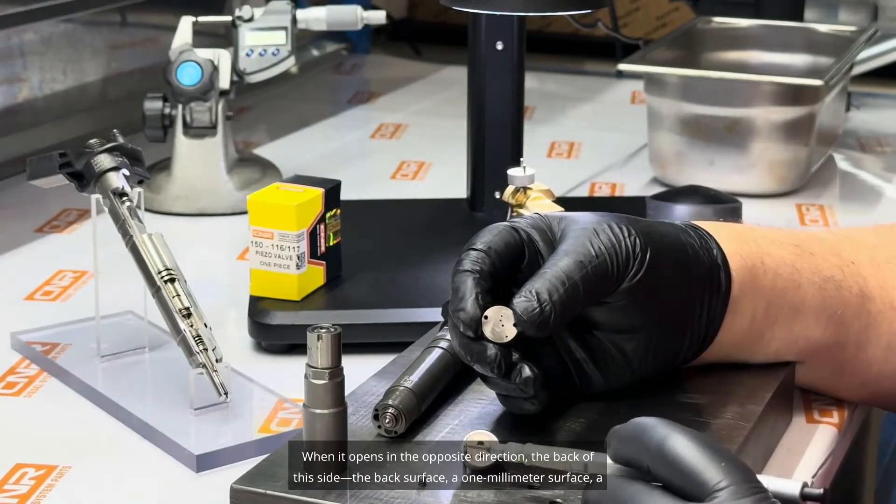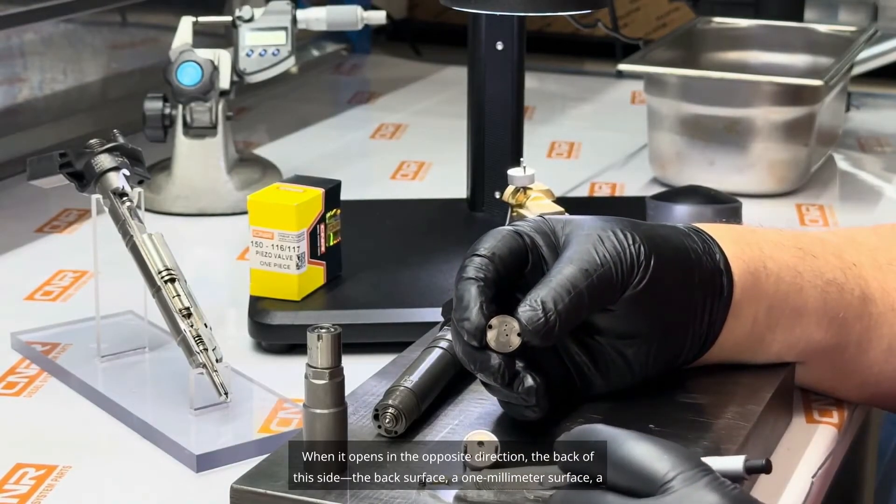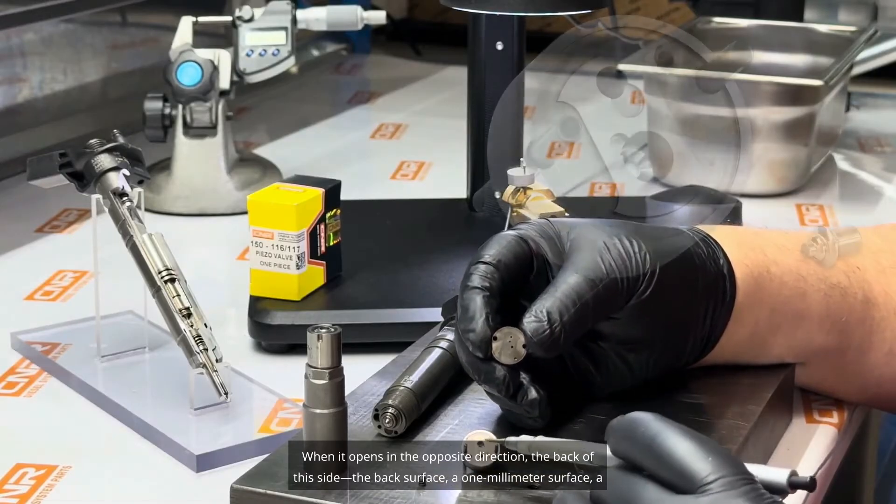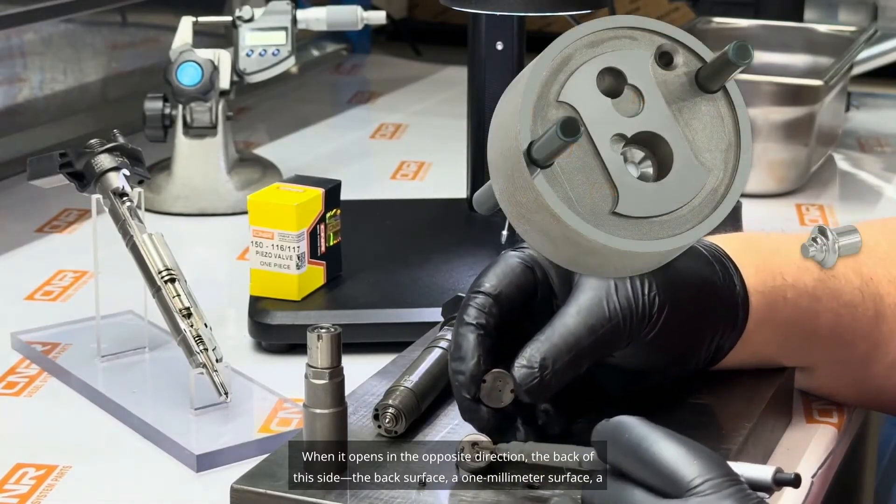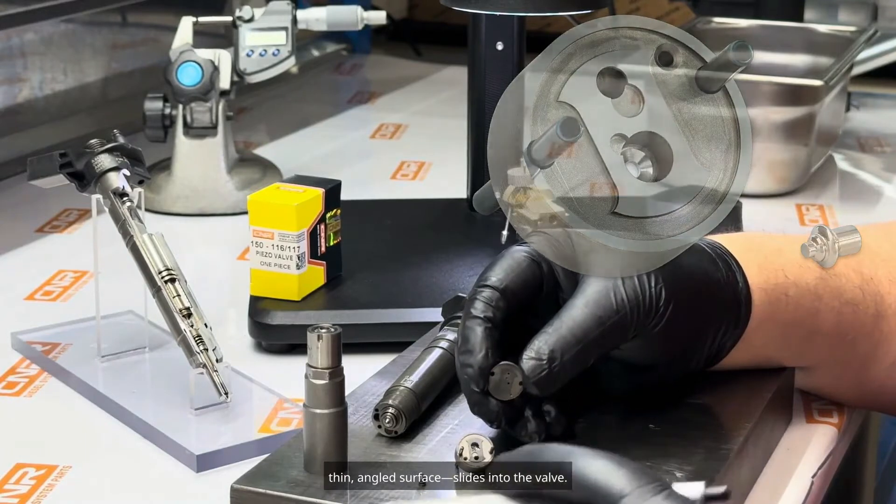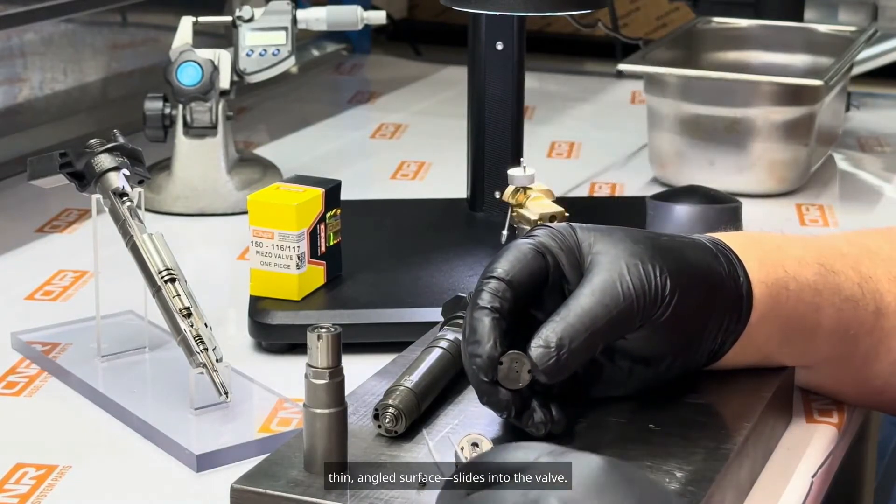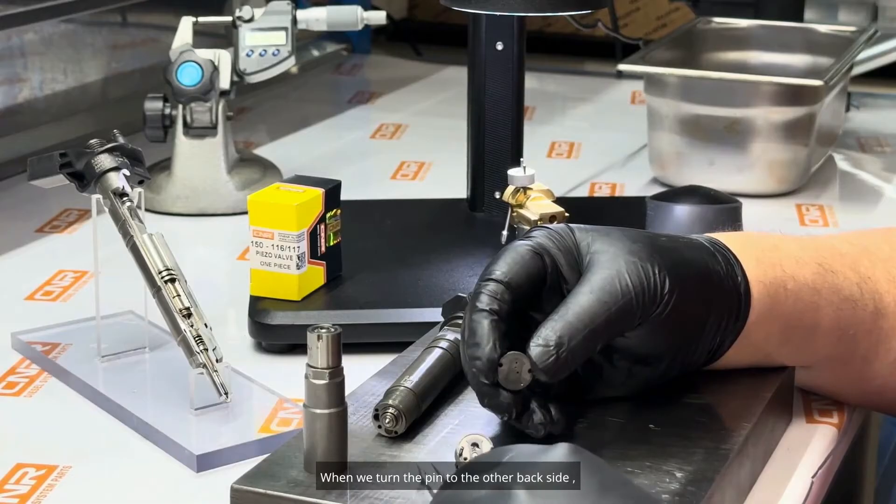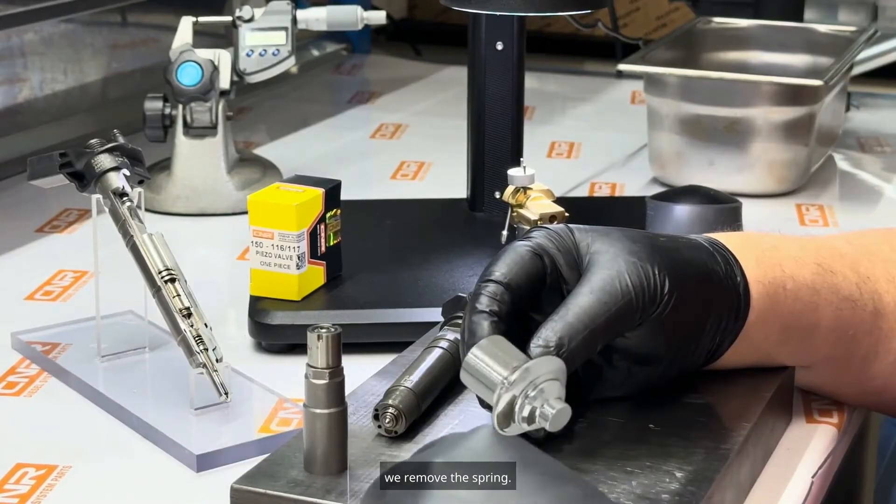It both seals the face of the pin. We removed it. Also seals the small millimeter-sized surface at the front of the pin when it opens, blocking the return port here. When it opens in the opposite direction, the back of the side, the back surface, a one-millimeter surface, a thin angled surface, slides into the valve.